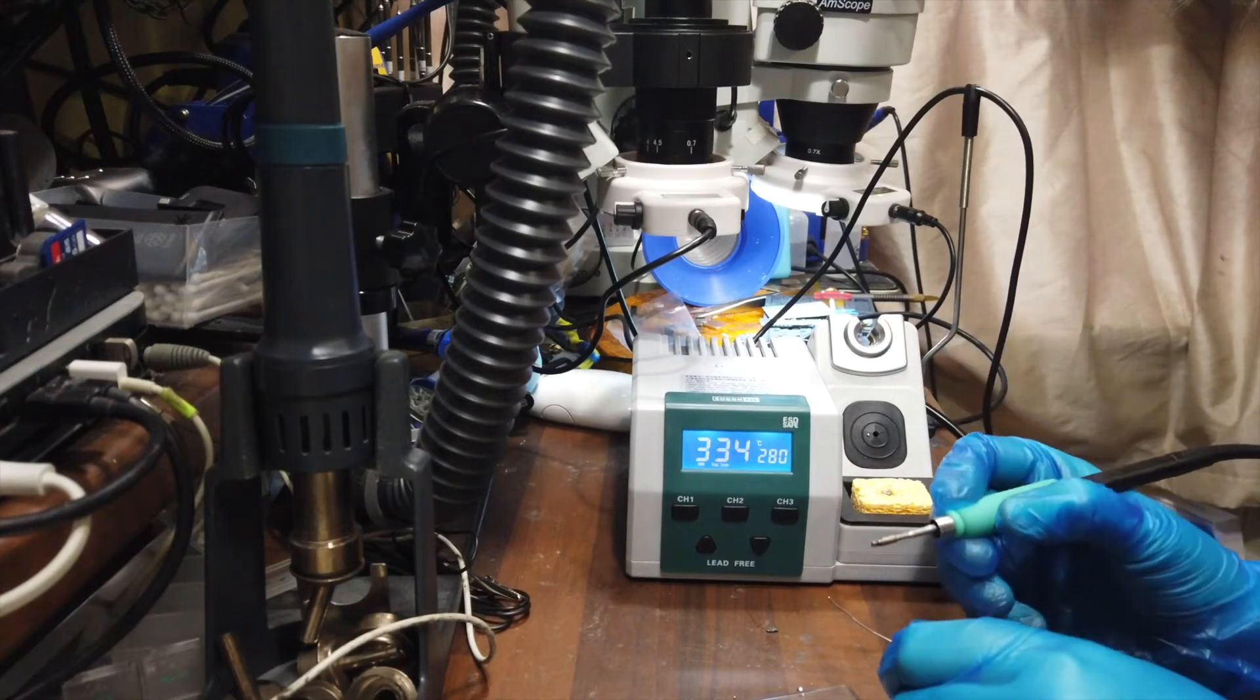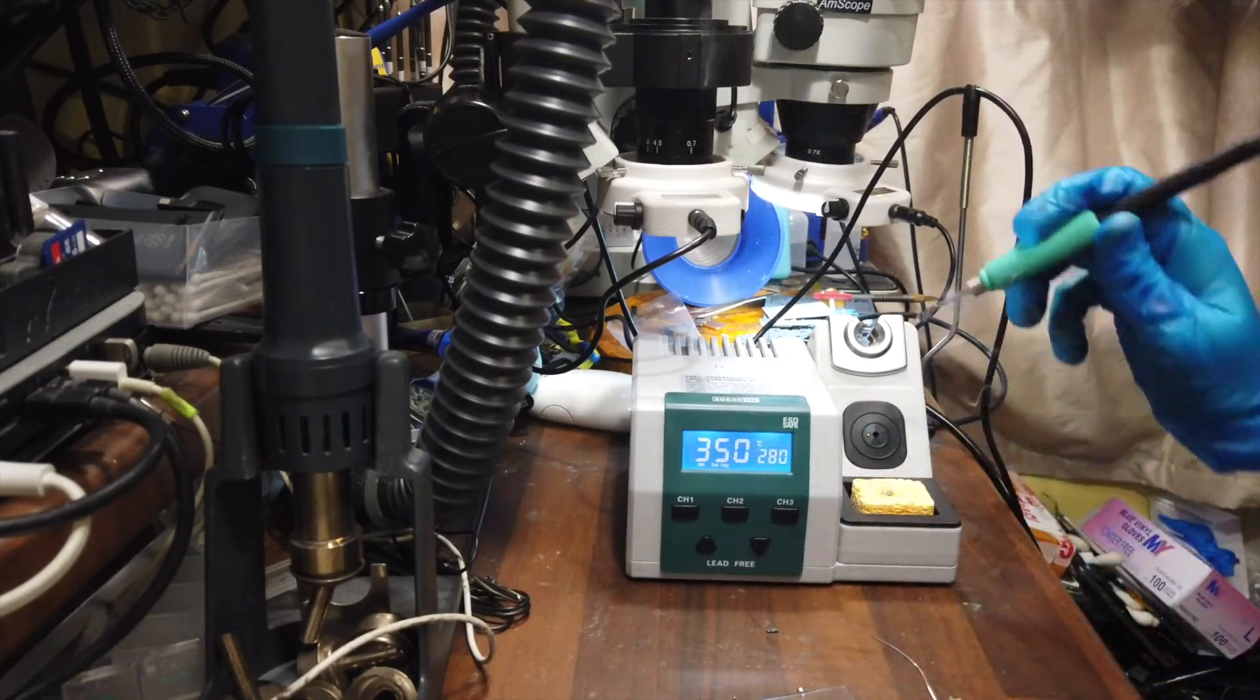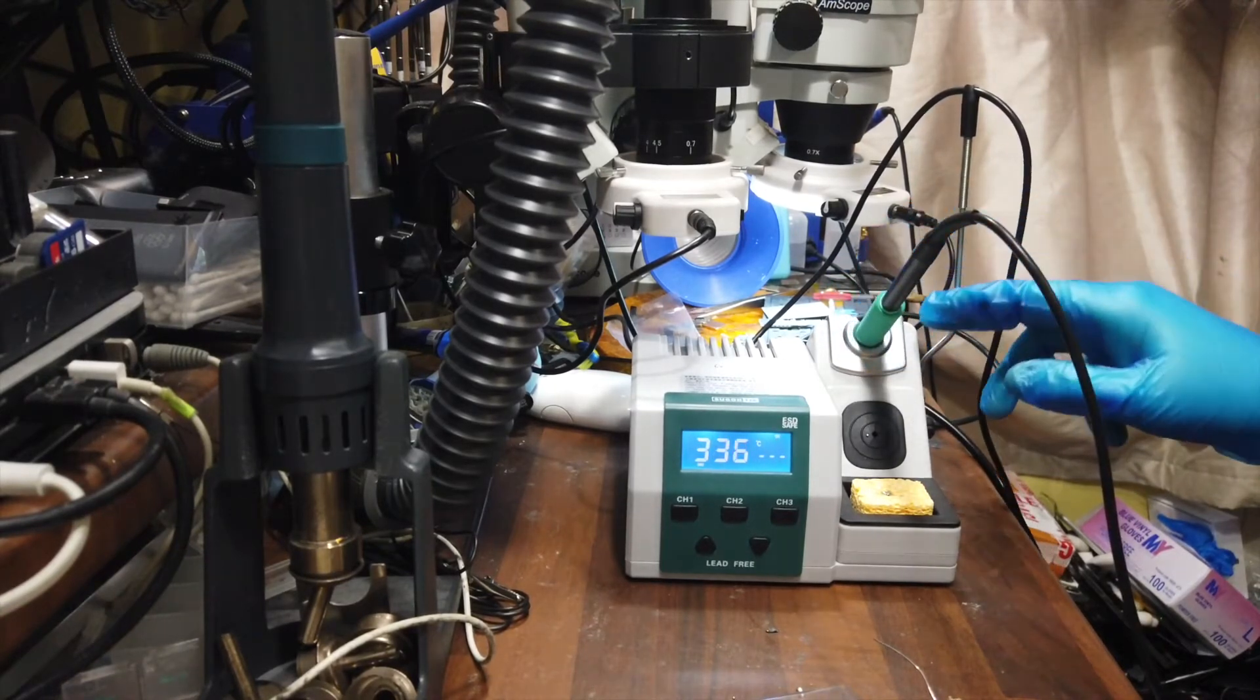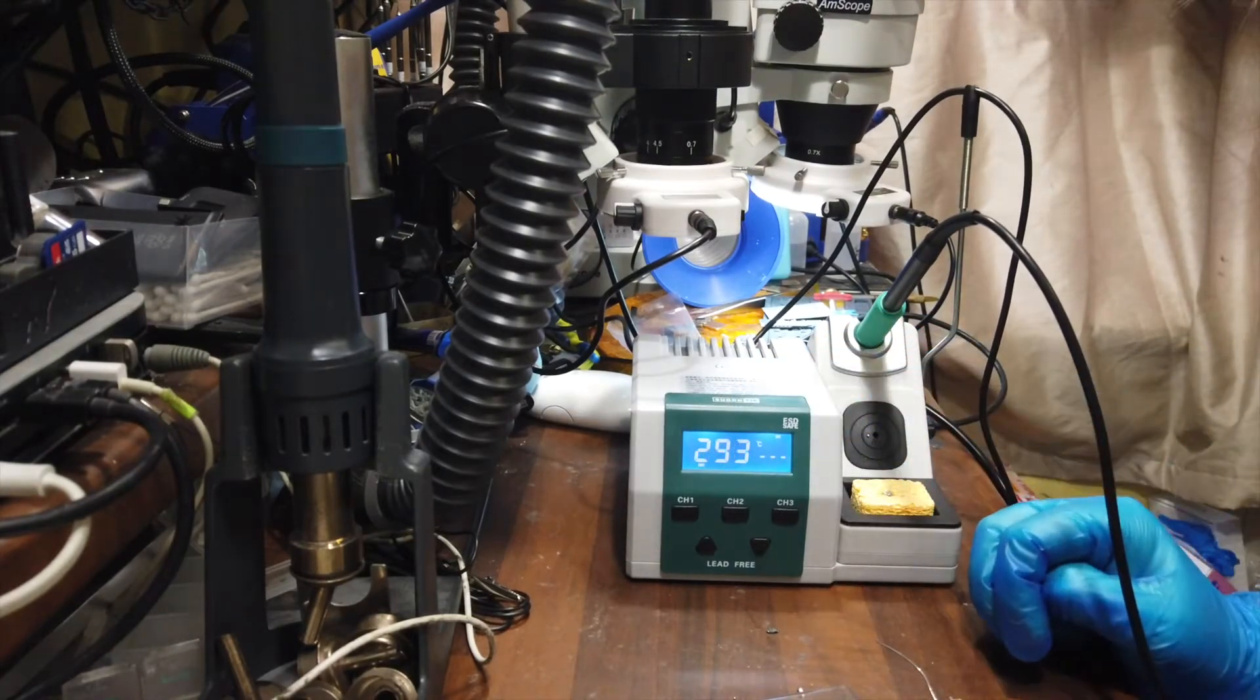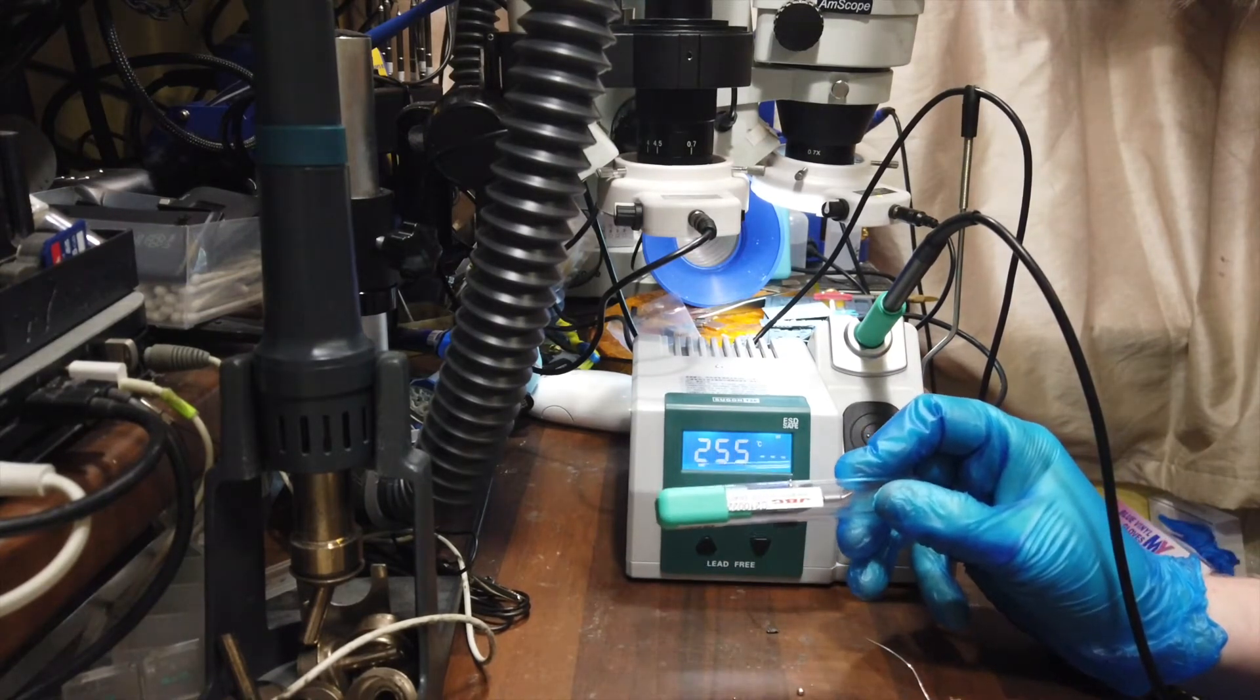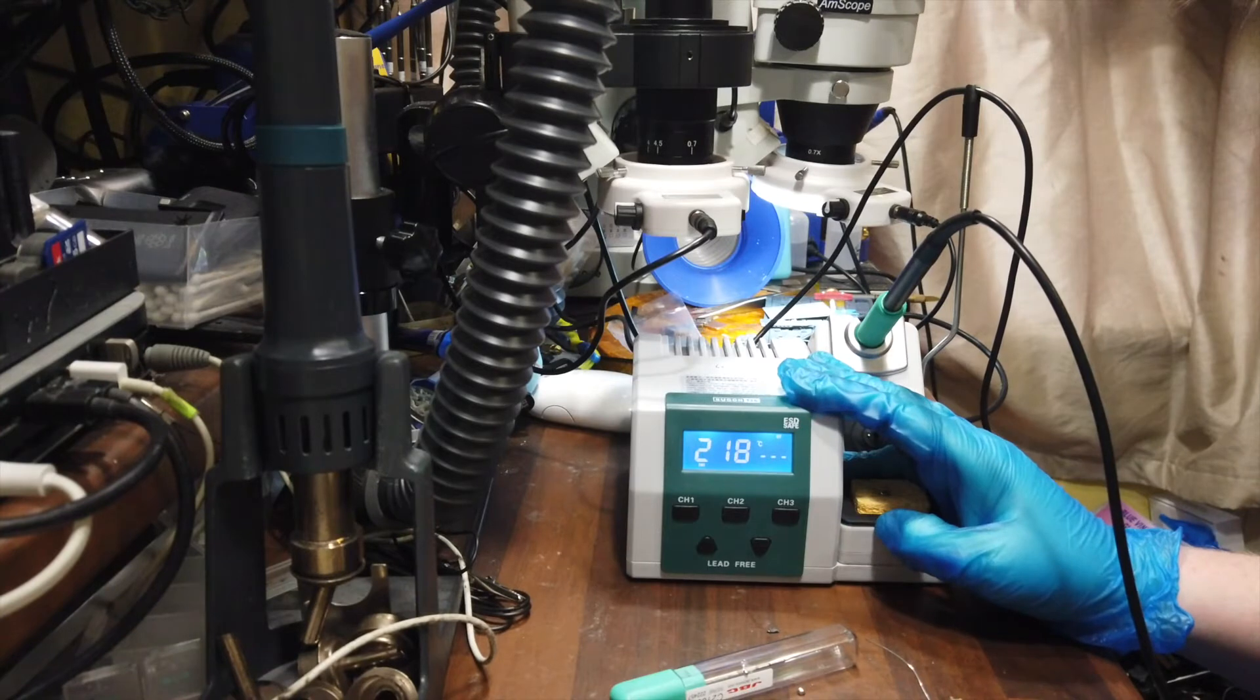For the money you can't really go wrong. I'm not being funny, this machine is 80 quid and you're using genuine JBC tips. You can't really go wrong for the money. It's a nice little station. Also the standard sense is when the iron is put in the holder, so obviously when you put the iron in the holder it starts cooling down. Once it gets to 150 I think it shuts the machine off. So yeah you can use this to use genuine JBC tips. I'm now going to be chopping this up.